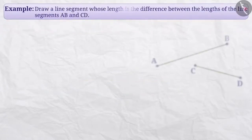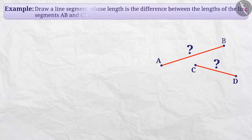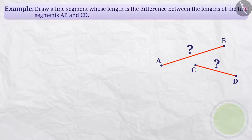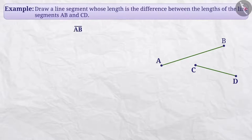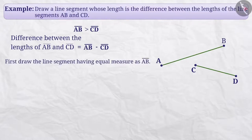Next example: draw a line segment whose length is the difference between the lengths of line segments AB and CD. Here we do not know the measurements of both AB and CD. So in such a situation, is it possible to find a line segment whose length is equal to the difference of both? Yes, it can be done if one understands geometry. The line segment AB appears to be longer than CD. To find the difference in their lengths, we subtract the lesser from the greater. So we will first draw a line segment equal in length to line segment AB.